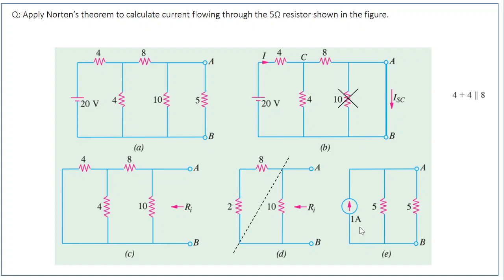Working out the math: the short circuit current Isc = 1 A and the Norton resistance Rn = 5 Ω. The equivalent Norton circuit is a 1 A current source in parallel with 5 Ω. Inserting the load resistance back, you have 1 A with two parallel 5 Ω resistors. Since they are equal, current splits equally: 0.5 A flows through the Norton resistance and 0.5 A flows through the load resistance.